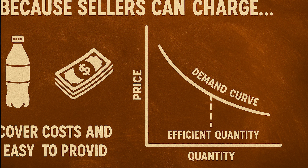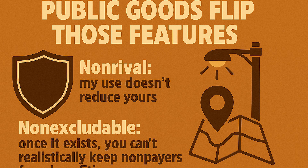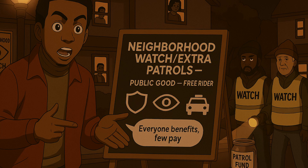Market demand is easy to tap: add up how many water bottles people want at each price and you get a nice demand curve. Competition tends to land us near the efficient quantity. Public goods are the opposite — non-rival, meaning my use doesn't reduce yours, like national defense, street lights, and GPS.